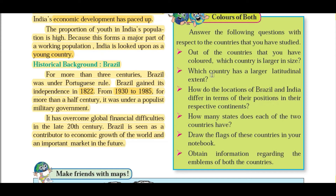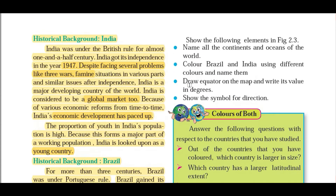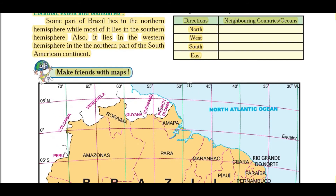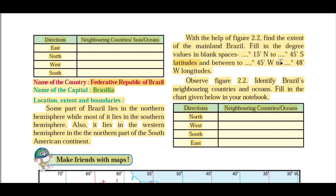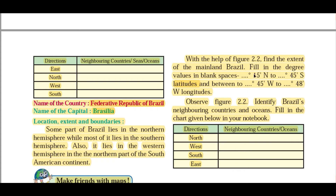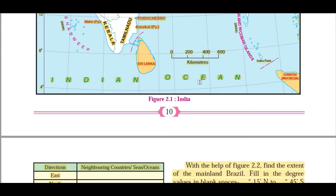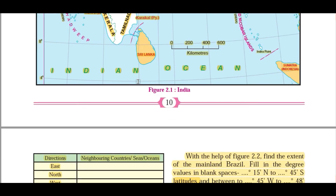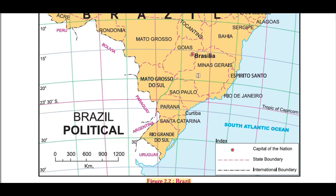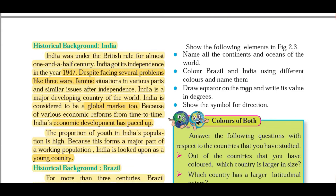India is the seventh largest country by area and its population is the second largest — remember these numbers. Which country has the largest latitudinal extent? It is Brazil. The latitudinal extent of Brazil is from 5 degrees 15 minutes North to 33 degrees 45 minutes South — almost 38 degrees. India's latitudinal extent is about 29 degrees. So there is an 11-degree gap, which is why Brazil's latitudinal extent is more than that of India.